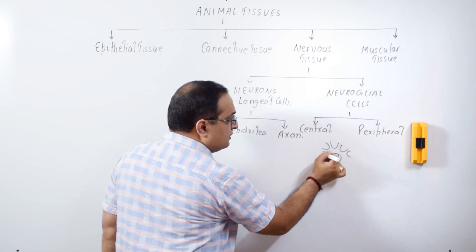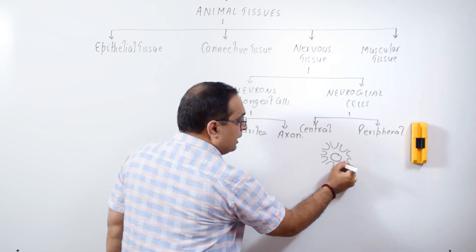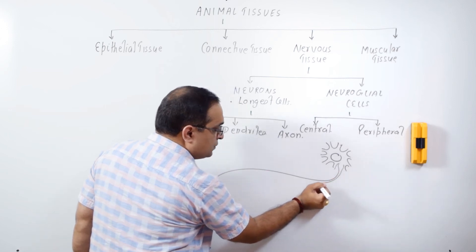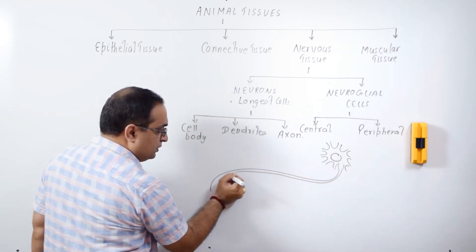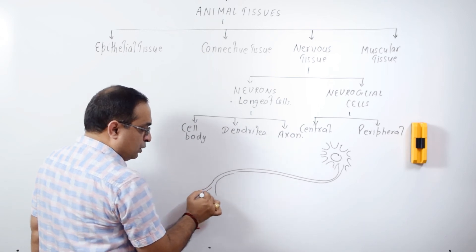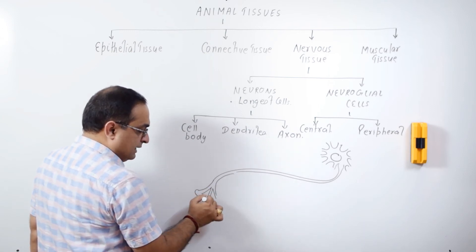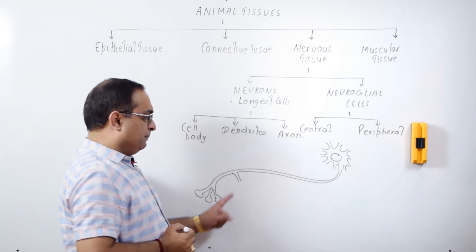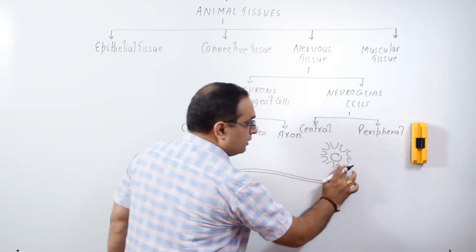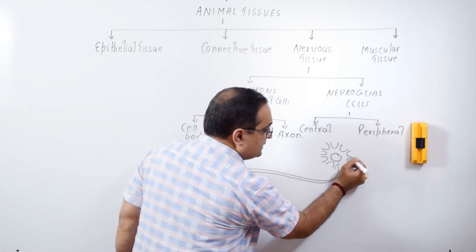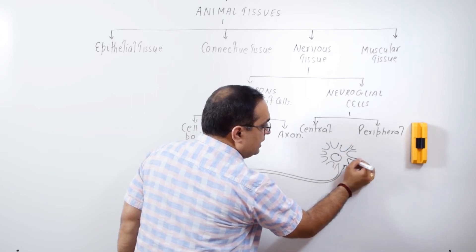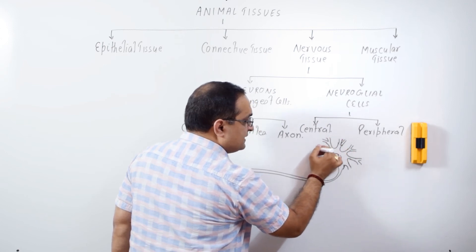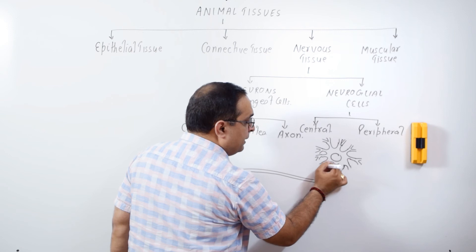these are the dendrites and then there is a long extension which is called axon. So, this long extension is axon. These are the axon endings which further end at synaptic end bulbs. This is a lateral branch which is collateral. So, these extensions are dendrites. There can be thousands and thousands of dendrites in a typical multipolar neuron. There are neurons which can have a single dendrite and a single axon. They are called bipolar neurons.